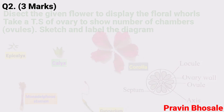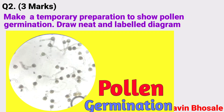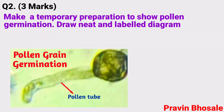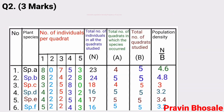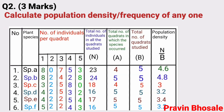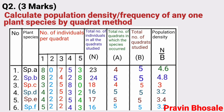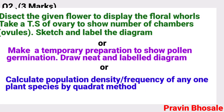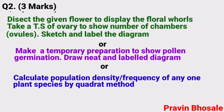Or make a temporary preparation to show pollen germination. Draw a neat and labelled diagram of the same. Or calculate population density and frequency of any one plant species by the quadrat method. So in question number two, out of the three experiments, you have to perform one, as instructed by the examiner.